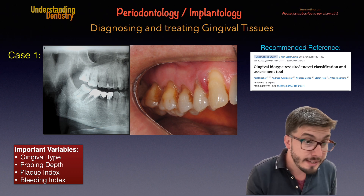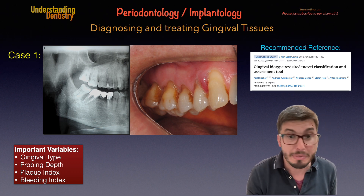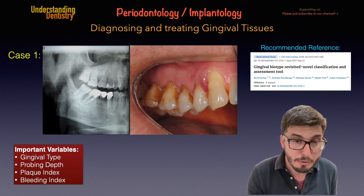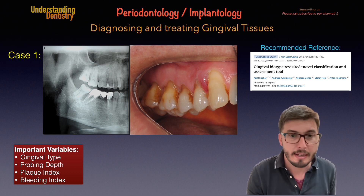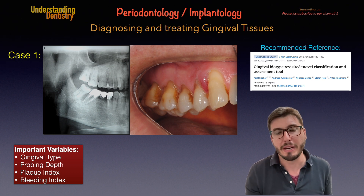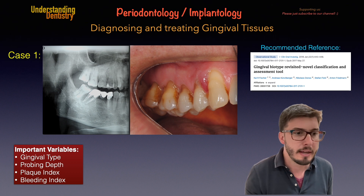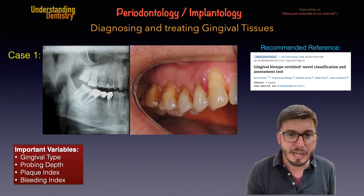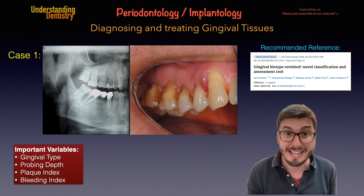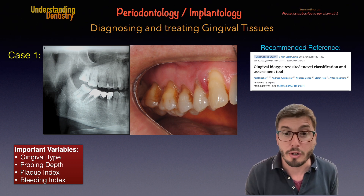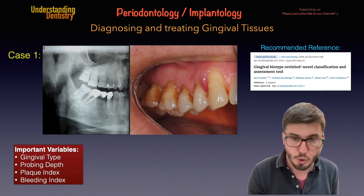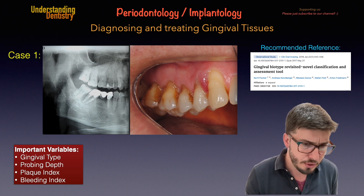Probing depth, plaque index, and bleeding index are variables that we can assess in the clinic. They are used by research, but they are actually variables we assess on our patients during the clinical intra-oral examination.